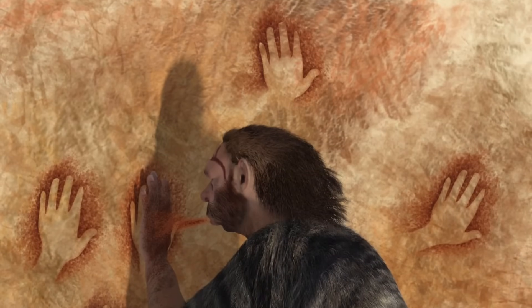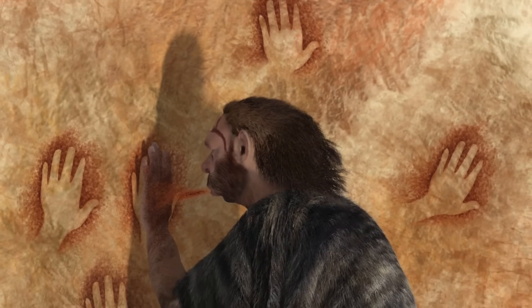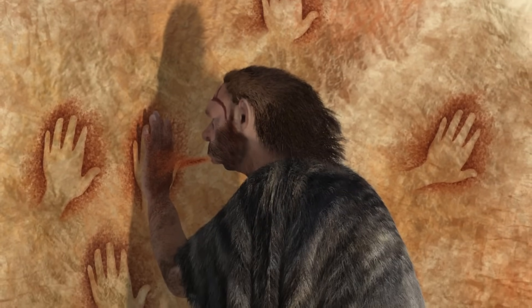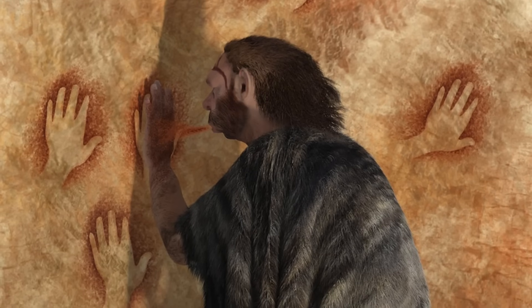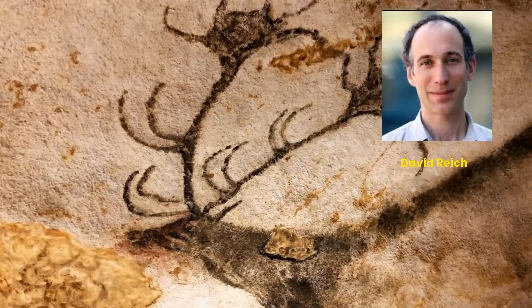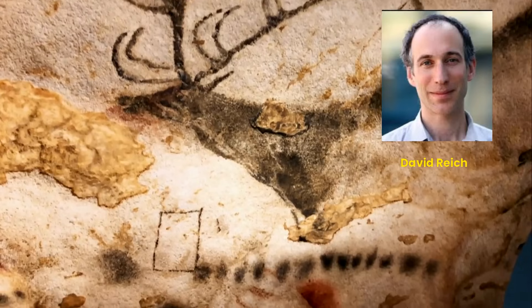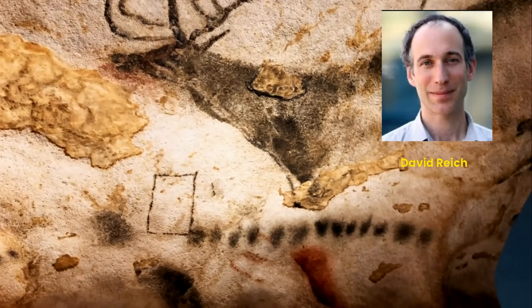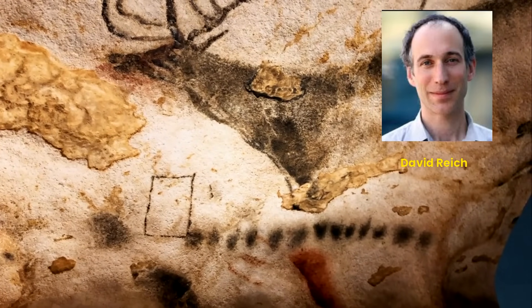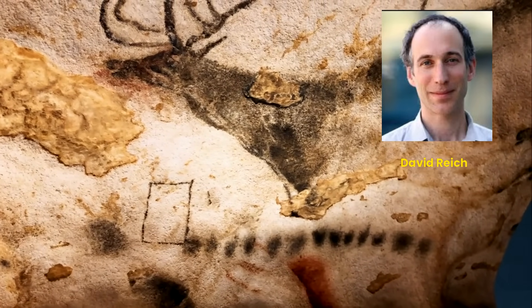What makes Basal-Eurasians particularly significant is their complete lack of Neanderthal DNA, a striking contrast to all other Eurasian populations. Reich's lab at Harvard also demonstrated that Basal-Eurasians diverged from other human lineages before the introgression of Neanderthal DNA into the ancestors of all non-African populations.